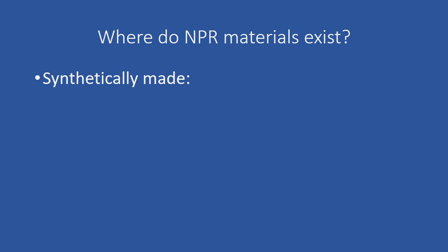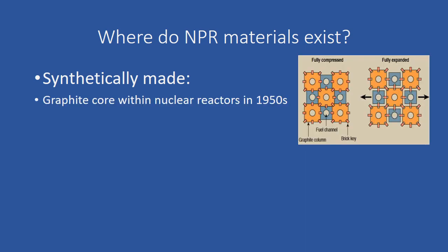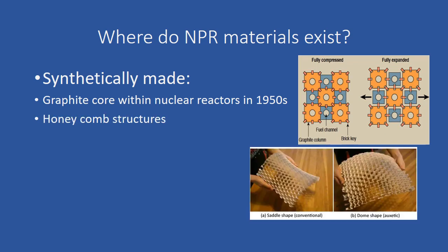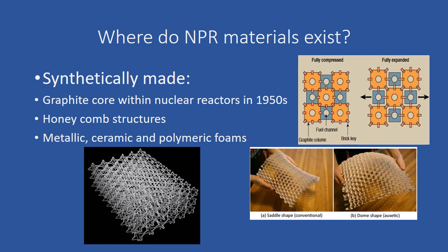Synthetically made auxetics are more common. They were used designing a graphite core within nuclear reactors in the 1950s. Honeycomb and truss-like auxetic structures can be man-made. Many foams are also constructed including metallic, ceramic, and polymeric.